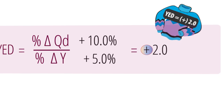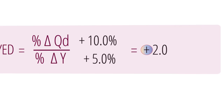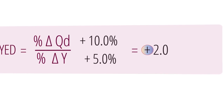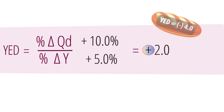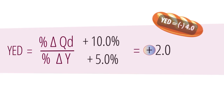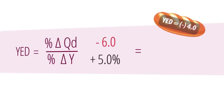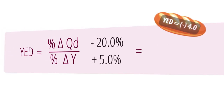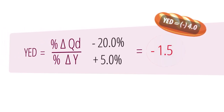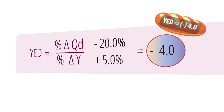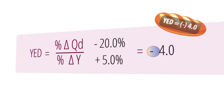However, if demand for bread falls by 20% following an increase in income of 5%, the YED for bread over the relevant income range is -4. In the case of bread, the result is a negative one.